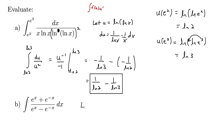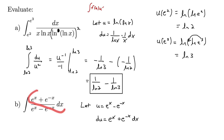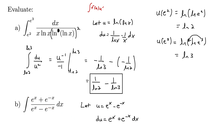What if we let u equal e to the x minus e to the negative x? Then du is e to the x — and the derivative of e to the negative x is negative e to the negative x, so minus and minus make plus — giving us plus e to the negative x dx. That's exactly what we have in the numerator. So we can replace everything in this integral and we now have the integral of du over u.